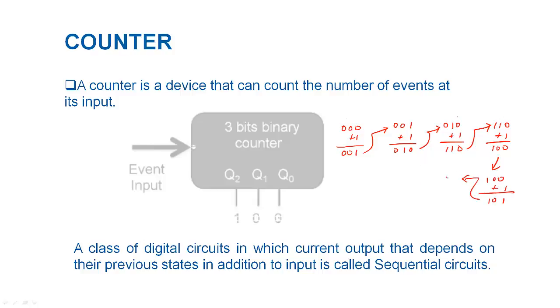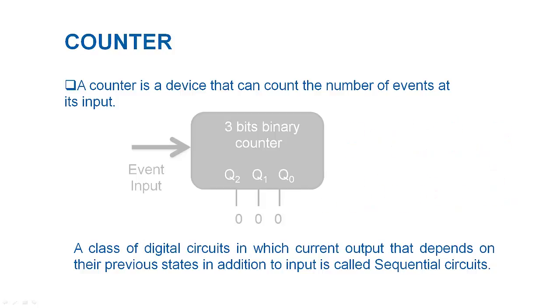This behavior is a contrast to a class of digital circuit where output is a pure function of only the present input. Such circuits are called combinational circuit. Whereas a circuit in digital electronics where next output is determined based on the current state of the circuit in addition to the input is called sequential circuit.